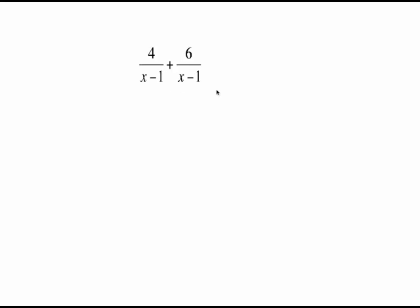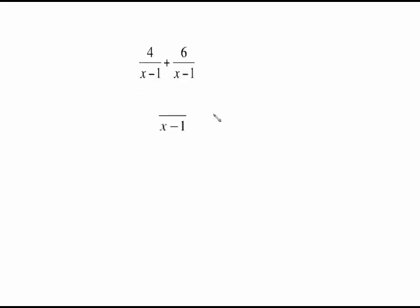This video is the second video in our adding and subtracting rational expressions series. To add or subtract rational expressions we must have a common denominator. In this case we do have the same denominator of x minus 1, which means we keep that denominator and add the numerators together. 4 plus 6 gives us 10, so the answer is 10 over x minus 1.